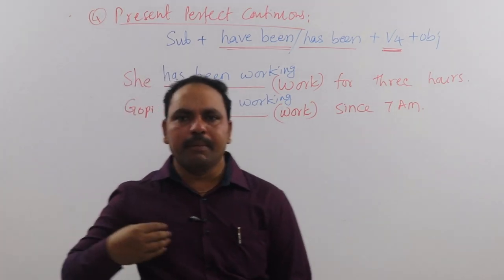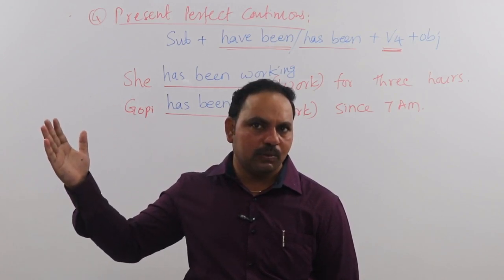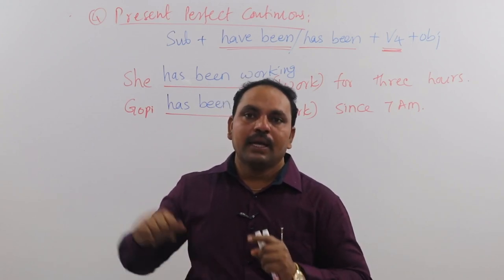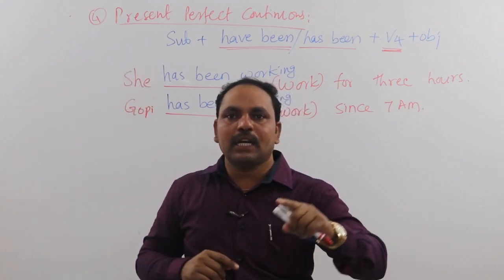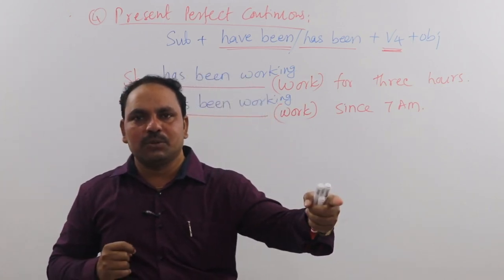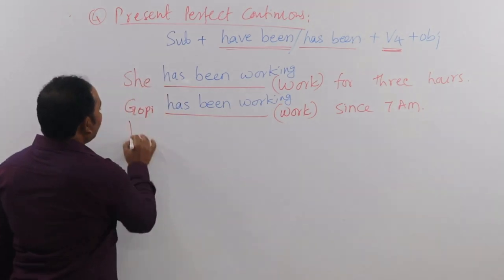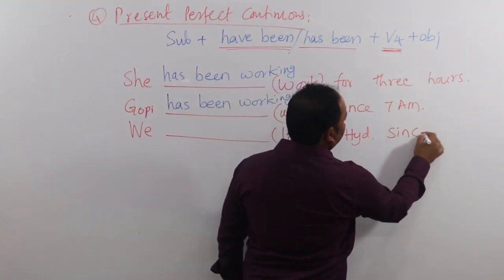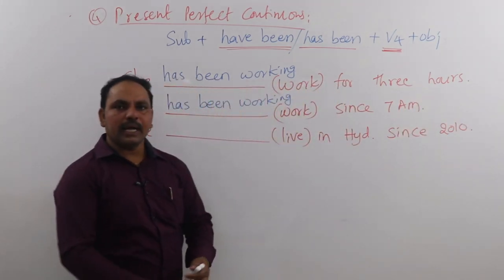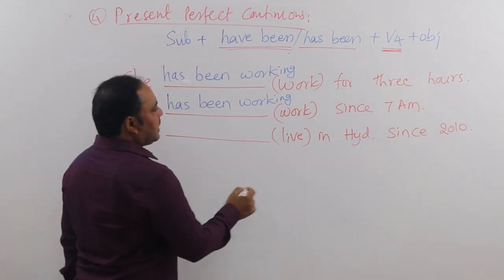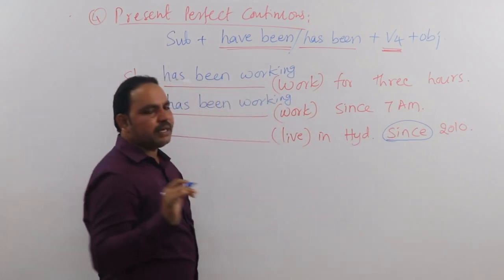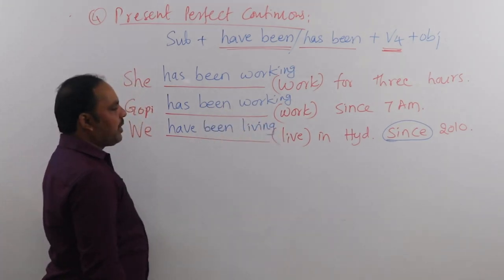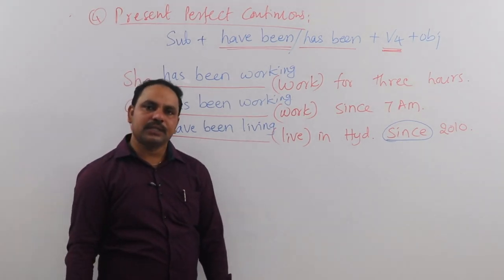Next example: We have been living in Hyderabad since 2010 and we are still here. The action started in the past (2010) and is still continuing. Since 'since' is a clue word for present perfect continuous, the answer is: 'We have been living in Hyderabad since 2010.'